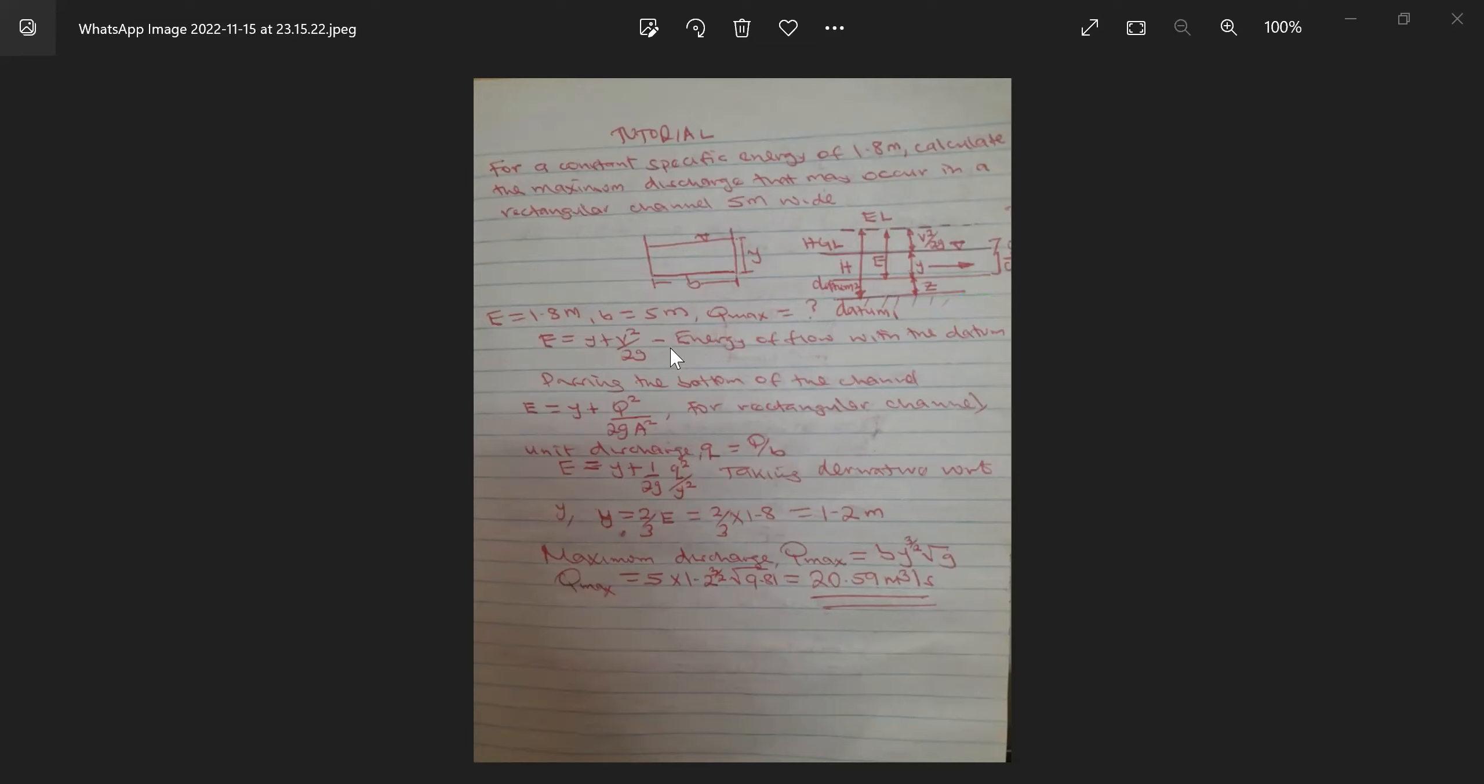Because we say that when we talk about specific energy head, we consider energy of flow with datum passing the bottom of the channel. So it means we consider that our datum is passing here. So our z is equivalent to zero. So this implies that the total specific energy head will only be equivalent to the pressure head plus velocity head. So when you ask what is the specific energy, it's just energy of flow when the datum is passing the bottom of the channel.